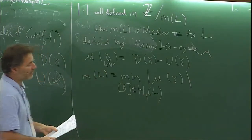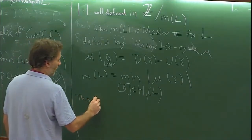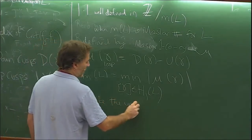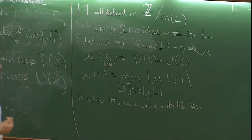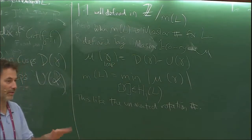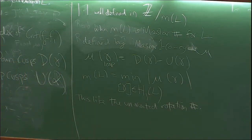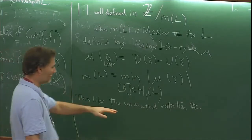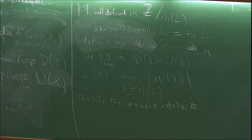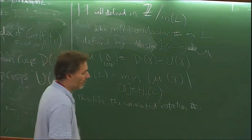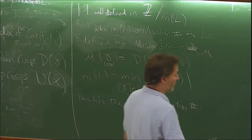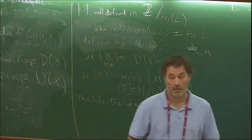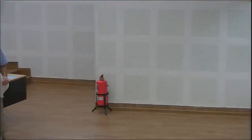This is like the unoriented rotation number that you saw in the lecture on Legendrian knots, relating to Thurston-Bennequin number and rotation number. It was an unoriented rotation number because it didn't care about the direction of the tangent vector. This generalizes that idea — it's called the Maslow class, and that's how it manifests itself in this particular example of the front projection.